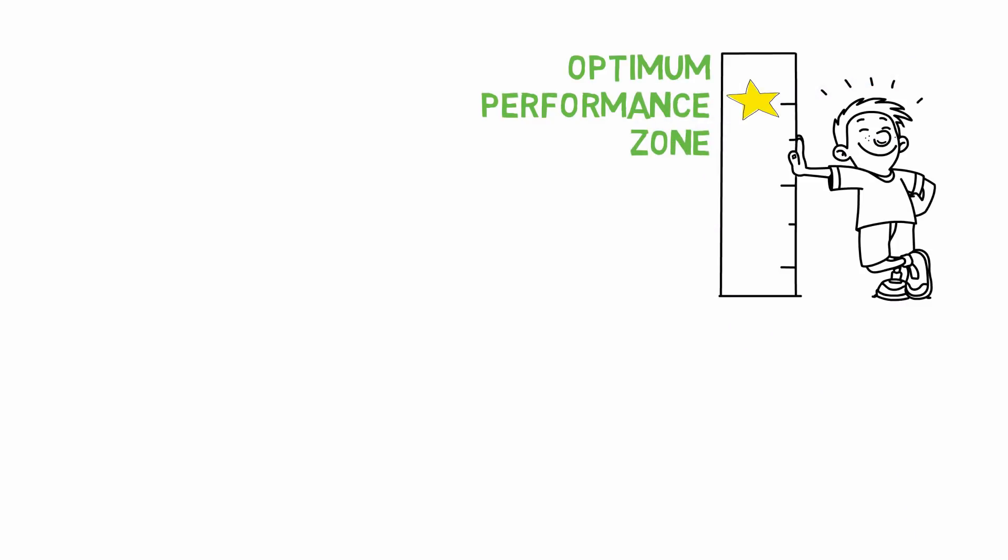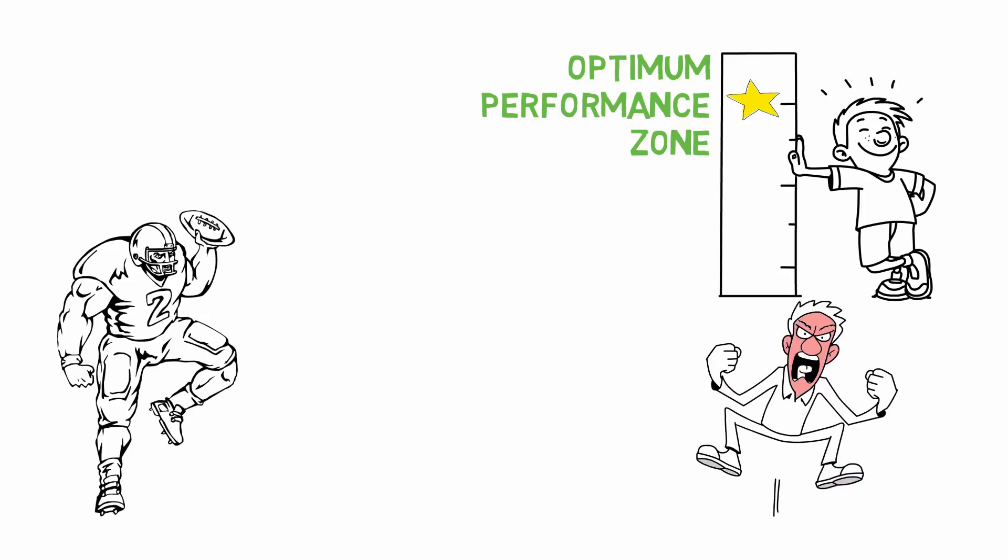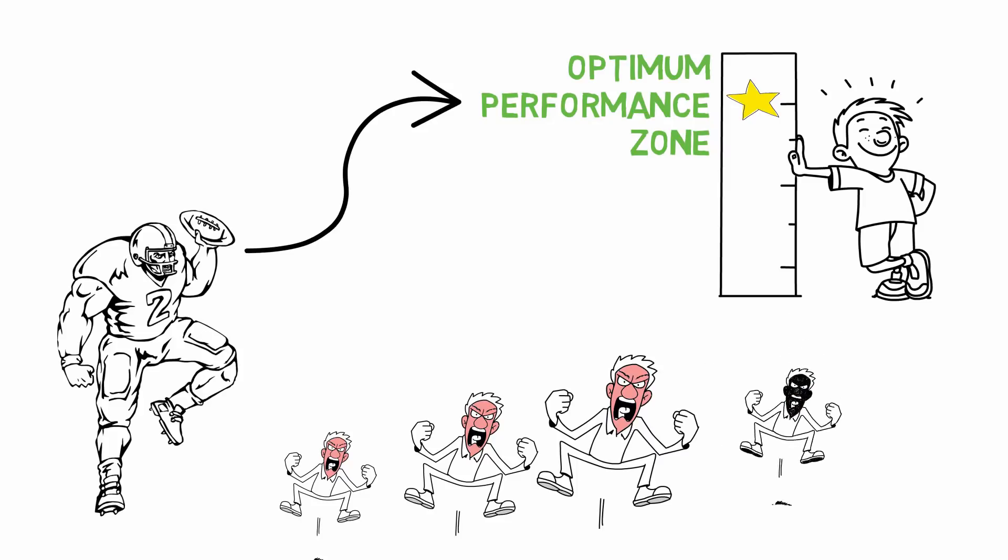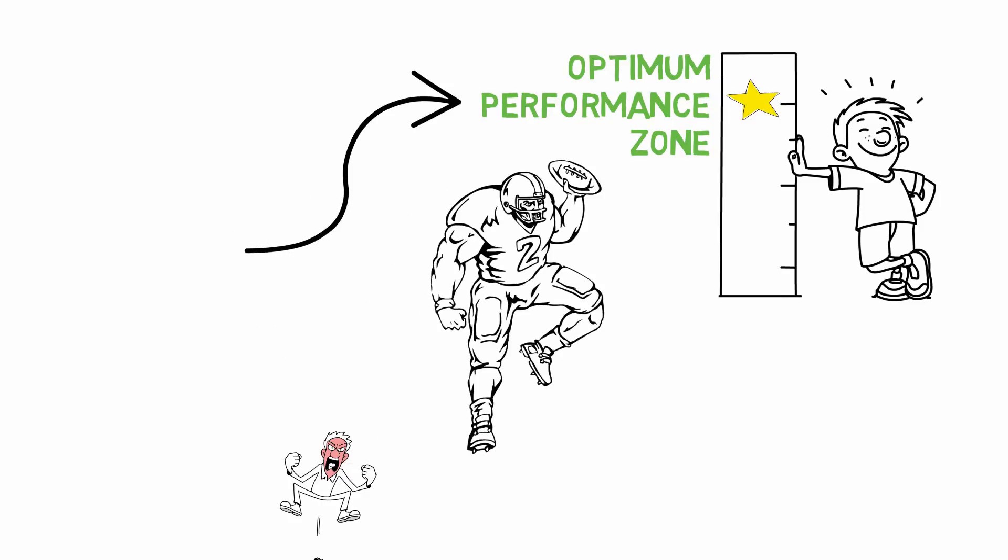The key is that the elite players, the clutch players, can stand in the face of pressure and regulate their emotions such that they get themselves in the peak performance zone. Even when there's too much pressure, they can get themselves in the peak performance zone. They don't let the situation dictate their emotional state. The external situation does not dictate how much pressure they feel, and hence they can do their very best.